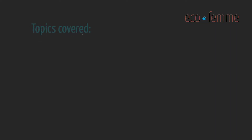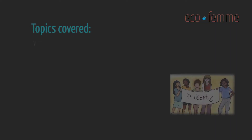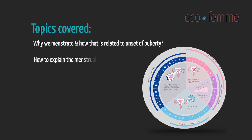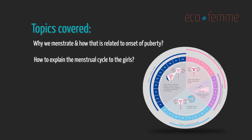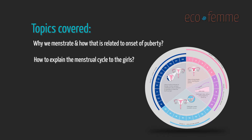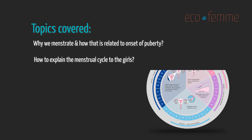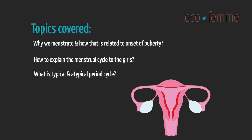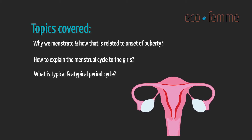This is the second video in this series, part two of the menstrual health education program, focusing on the female anatomy of the menstrual cycle and how we teach it to the girls. There are a number of key messages we cover in this session: why we menstruate and how that is related to the onset of puberty, how to explain the menstrual cycle to the girls, and what is typical and what is atypical about a period, so the girls know when to seek help.